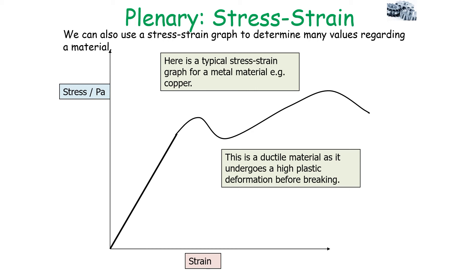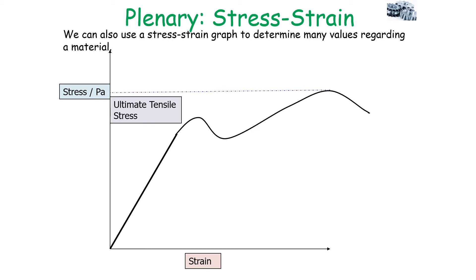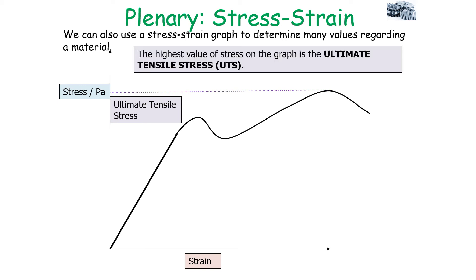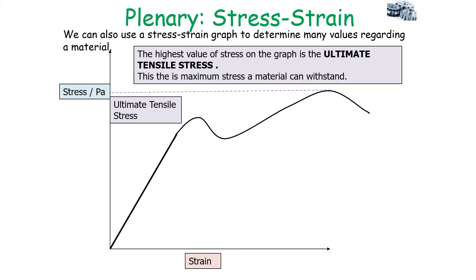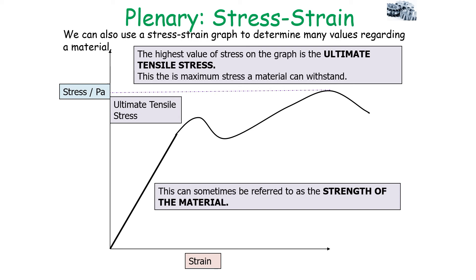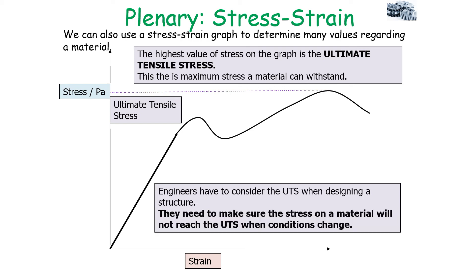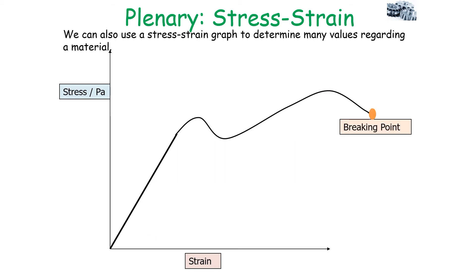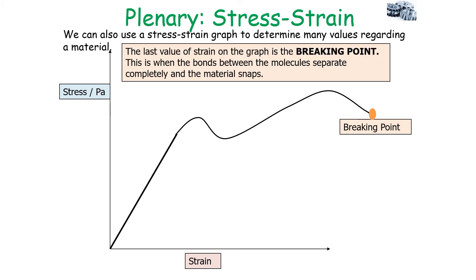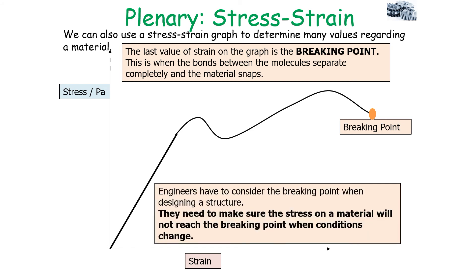There are several key features of a stress-strain graph to be aware of. The ultimate tensile stress (UTS) is the highest value of stress on the graph — the maximum stress a material can withstand, sometimes referred to as the strength of a material. Engineers must consider the UTS when designing a structure, ensuring the stress on a material never reaches the UTS when conditions change. The breaking point is the last value of strain — when molecular bonds separate completely and the material snaps.